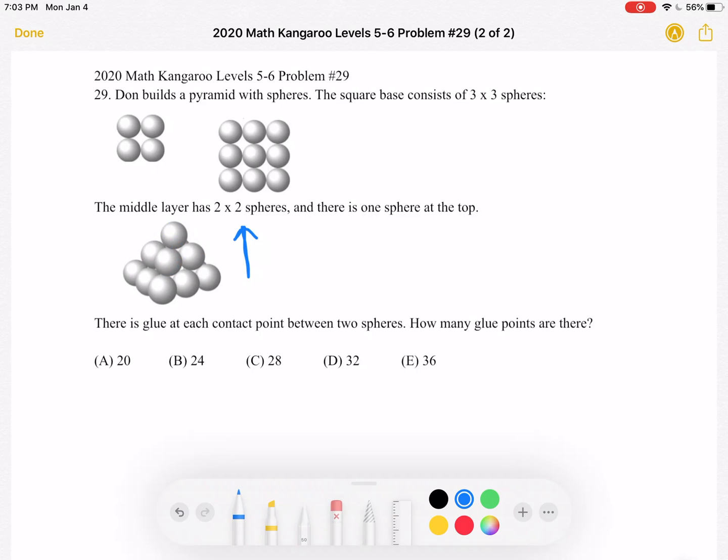So for between the first and second layers, we have four contact points.